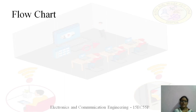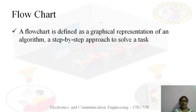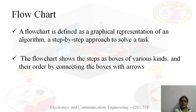The next step is to draw the flowchart. Before drawing it, let us see what a flowchart is. A flowchart is a graphical representation of an algorithm — that is, a step-by-step approach to solve a task. Here, the task is writing a program. This flowchart shows the steps as boxes of various kinds, and their order by connecting the boxes with arrows. So, in the algorithm we wrote the steps, and in the flowchart those steps are represented with various boxes connected by arrows — that is what a graphical representation means.